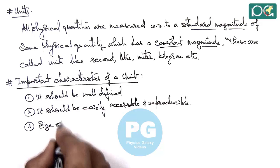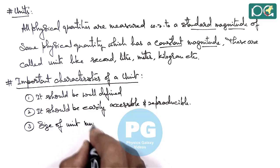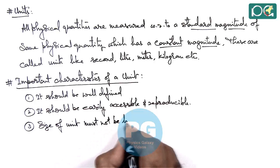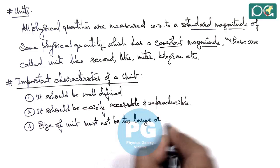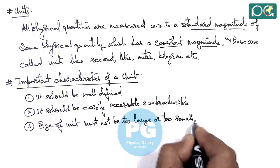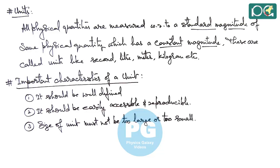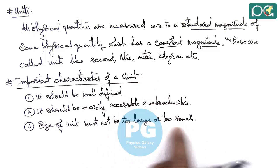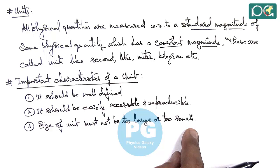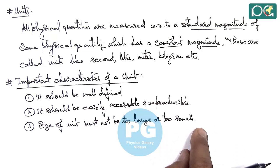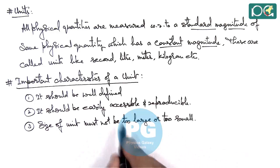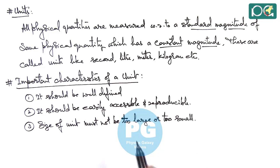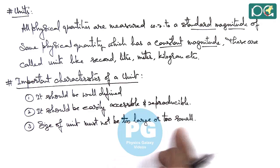Another important characteristic is that the size of the unit must not be too large or too small. For example, 1 millimetre is a very small length unit — metre is fine, but if we define millimetre as a standard unit it will be very difficult for measurement of large lengths. So whichever unit we choose for our physical quantity, it must be moderate — not too large, not too small — so that measurement does not become very difficult.